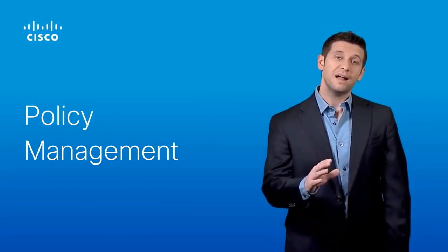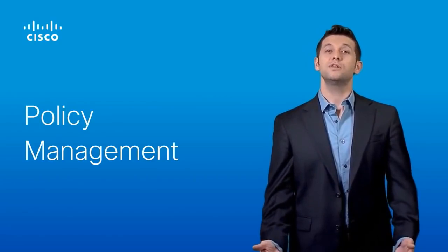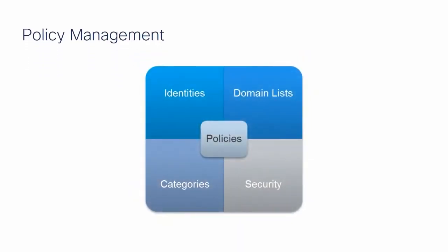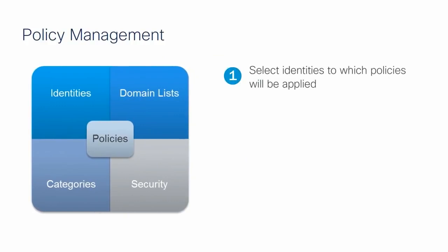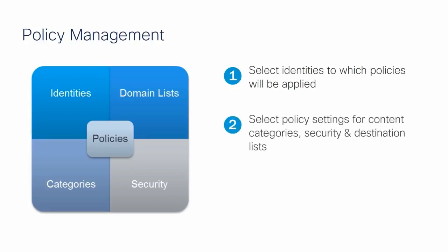Once up and running, customers use policies to control the level of protection for their deployment. All customers start with a default policy, which ensures that all identities within an organization receive a baseline level of protection. To create and apply company-specific policies, customers can use the Policy Wizard for step-by-step prompts. There are four steps required to create and edit policies. Step 1: Select identities to which the policy will be applied — identities include networks, categories such as roaming computers, or if integrated with Active Directory, users. Step 2: Select policy settings, making block-allow selections for web content categories, security types, and domain lists.